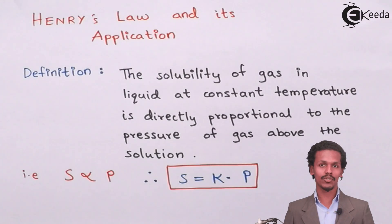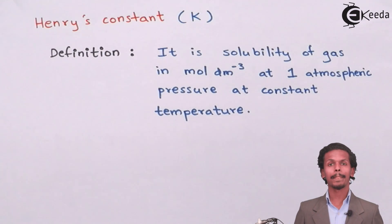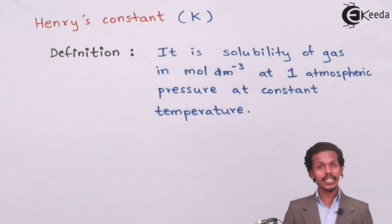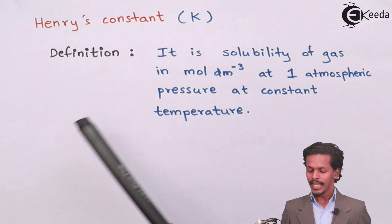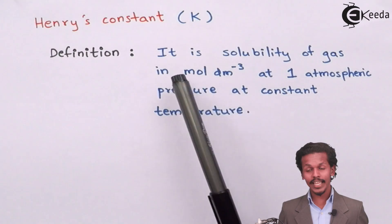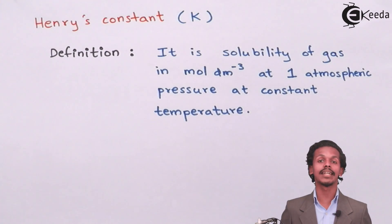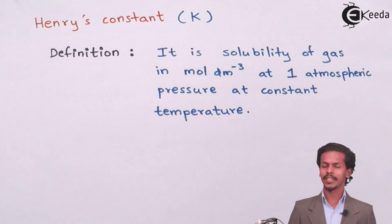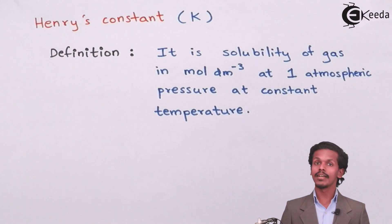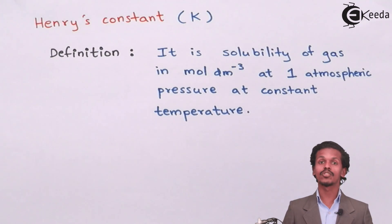Henry's constant, denoted by K, is defined as the solubility of the gas in moles per dm³ at one atmospheric pressure at constant temperature. So in the equation S = K × P, Henry's constant K equals the solubility when the pressure is one atmosphere.